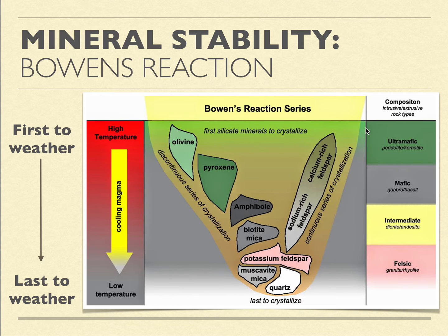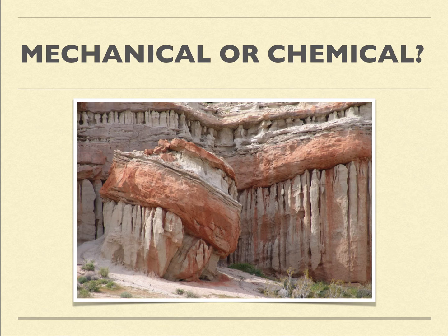I'm not asking you to memorize this diagram — I'm asking you to understand that there is what we call Bowen's Reaction Series, which puts things in an order, understanding that some minerals are more susceptible to weathering than others. And that brings us back to seeing how whatever makes up certain rocks is much more resilient than other material.